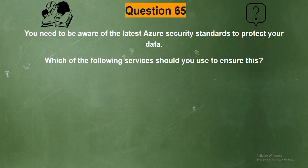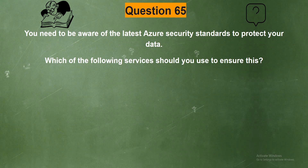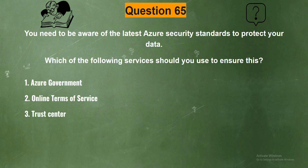Question 65. You need to be aware of the latest Azure security standards to protect your data. Which of the following services should you use to ensure this? The options are: Option 1, Azure Government; Option 2, Online Terms of Service; Option 3, Trust Centre; Option 4, Azure Compliance Documentation.